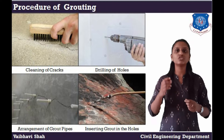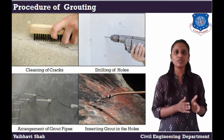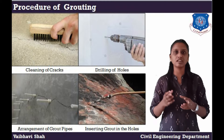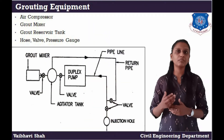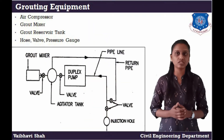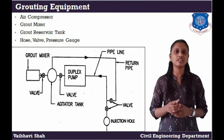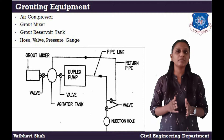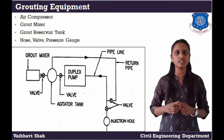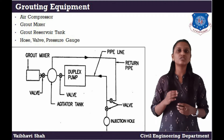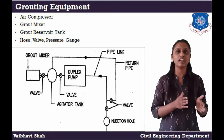Next is the grouting equipment. We use the components of the drilling machine. First is the air compressor. We use it to inject the grouting material through pipes, and the pressure is generated by the air compressor.